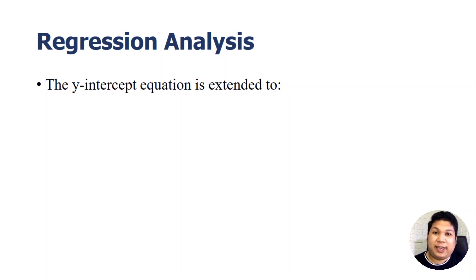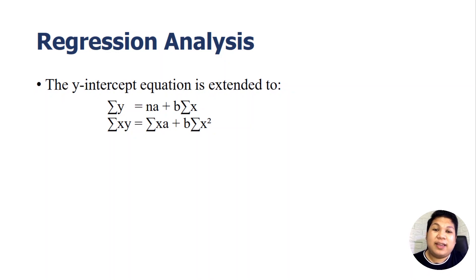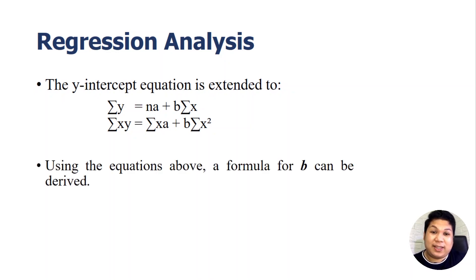The y-intercept equation is further extended in this analysis into: the summation of y equals n times a plus b times the summation of x. Another equation is: the summation of xy equals the summation of x times a plus b times the summation of x squared. Using these two equations, a formula for b — the slope — can be derived.